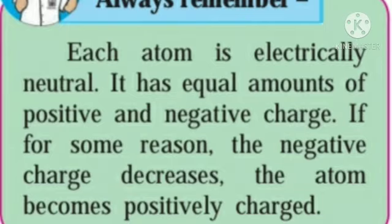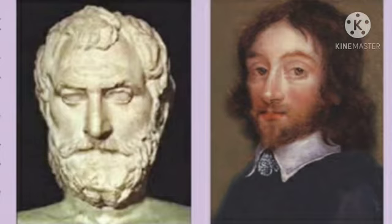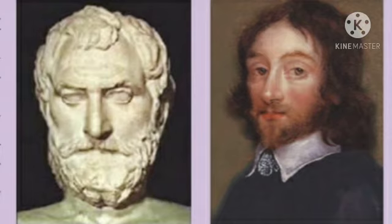About 2,500 years ago, a Greek scientist named Thales found that feathers are attracted toward a rod of yellow-colored amber which had been rubbed against a woolen cloth. Therefore, amber is called 'electron' in the Greek language. This property of amber to attract things was named 'electricity' by Thomas Browne in 1646 AD.